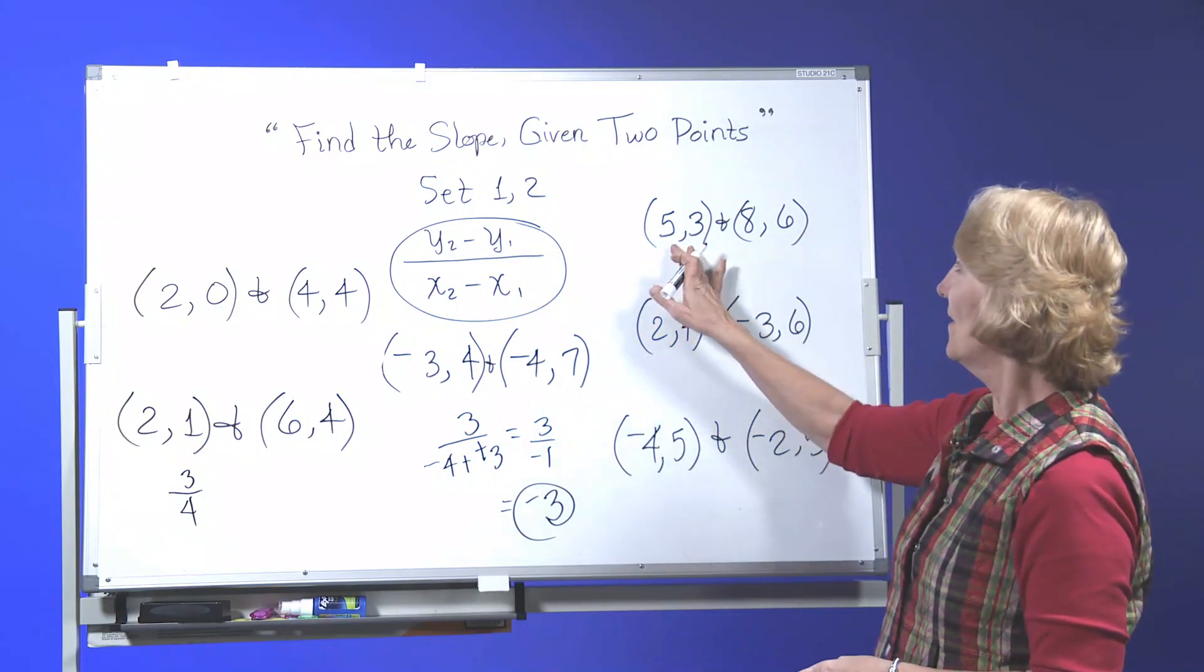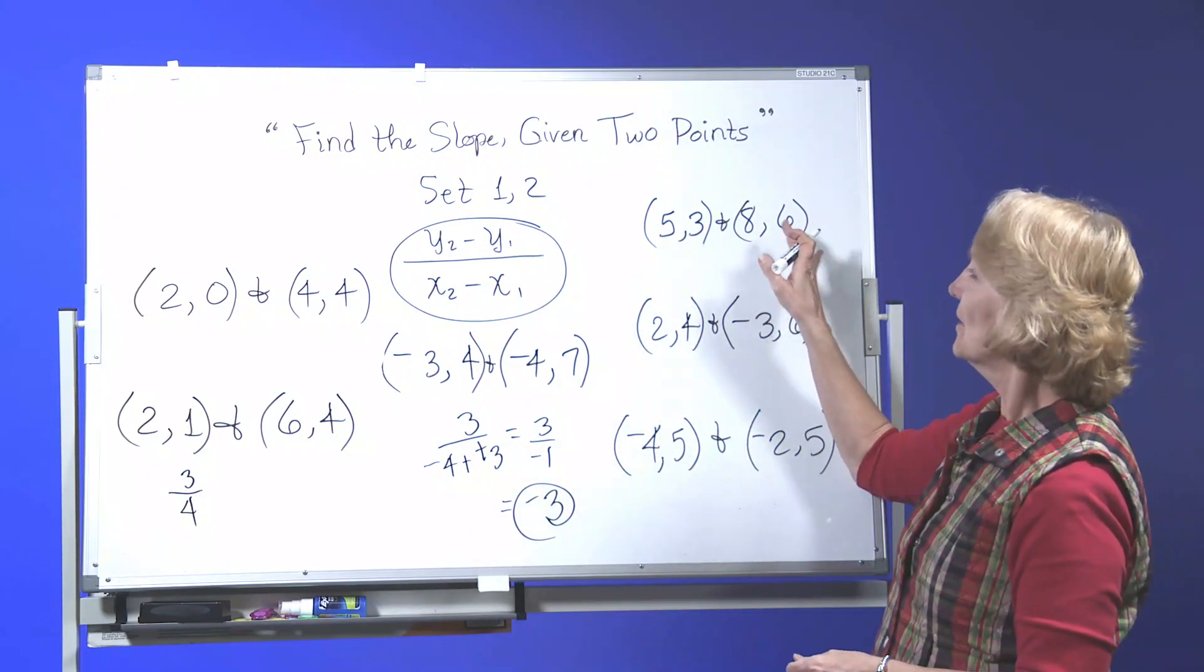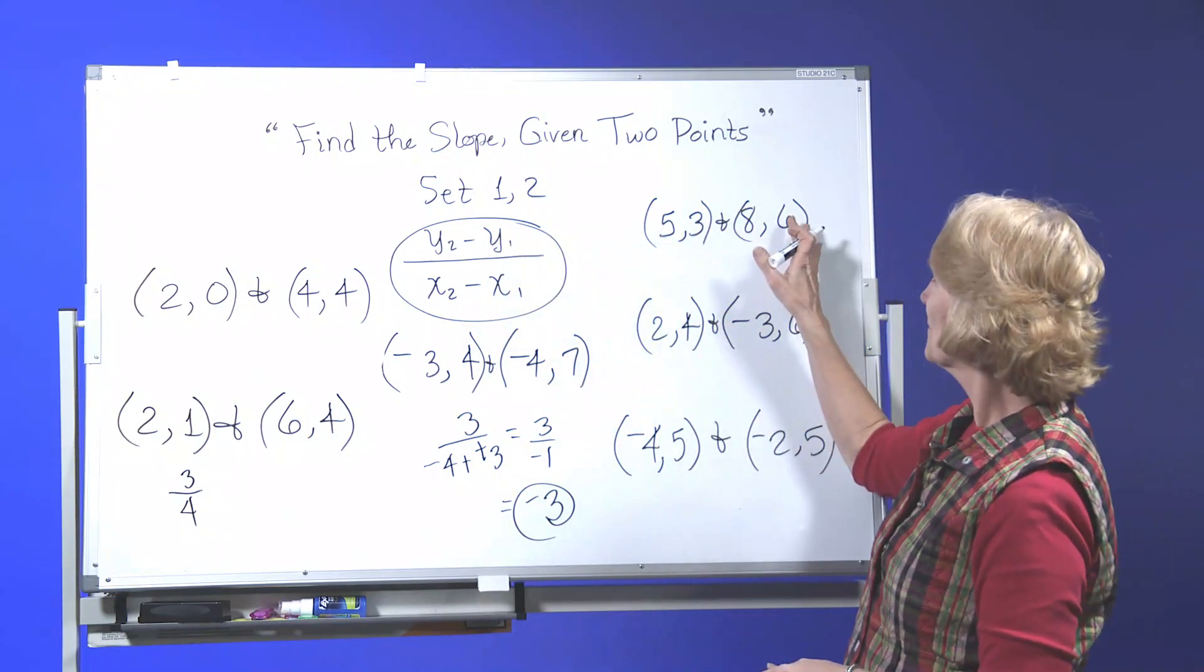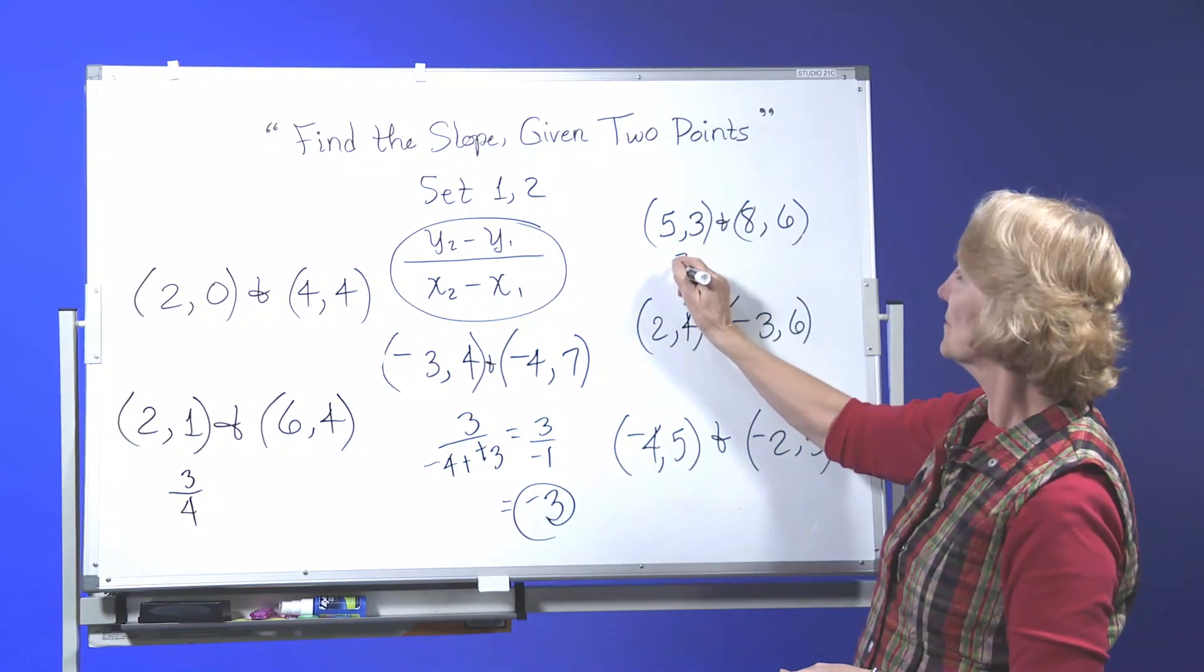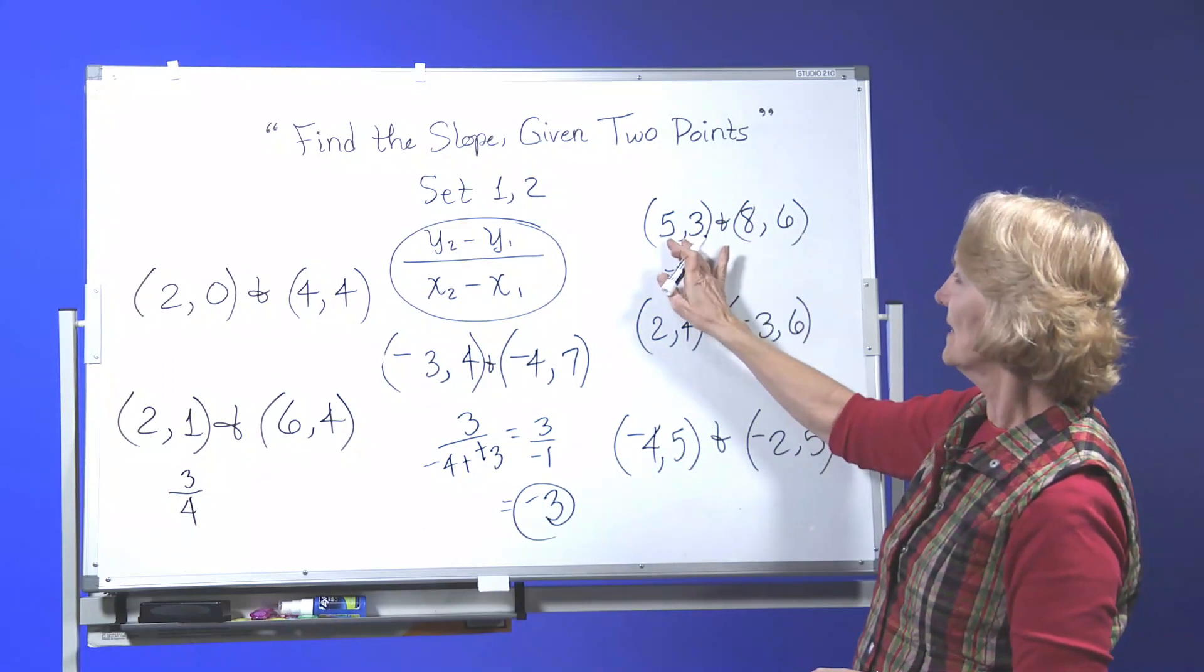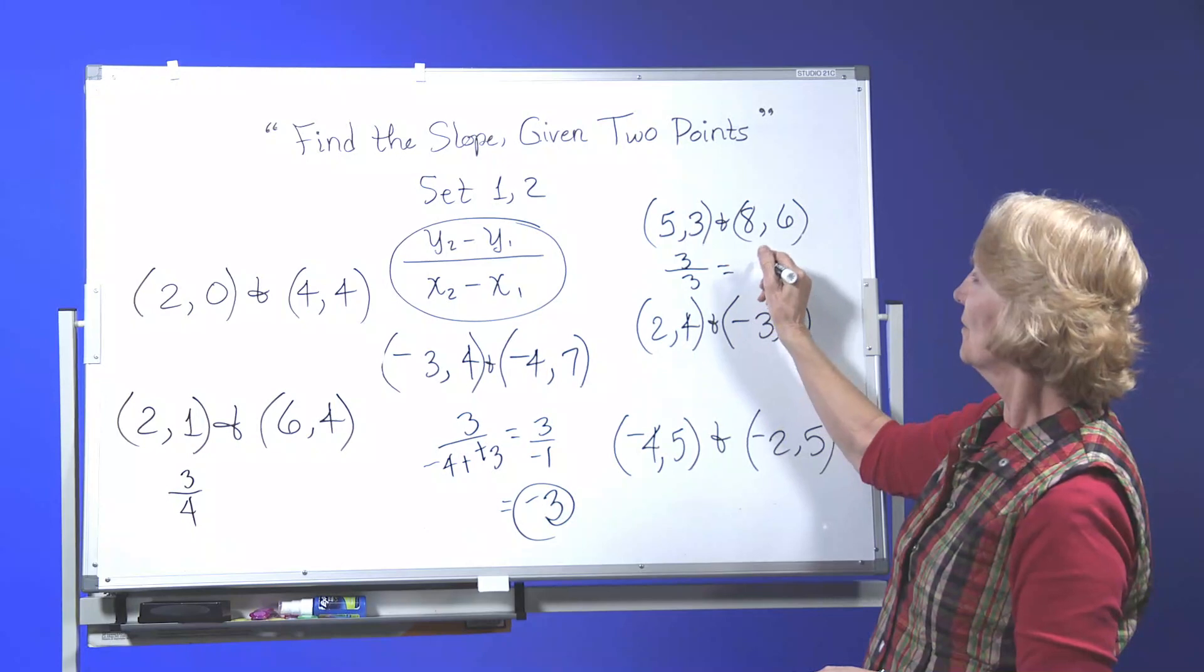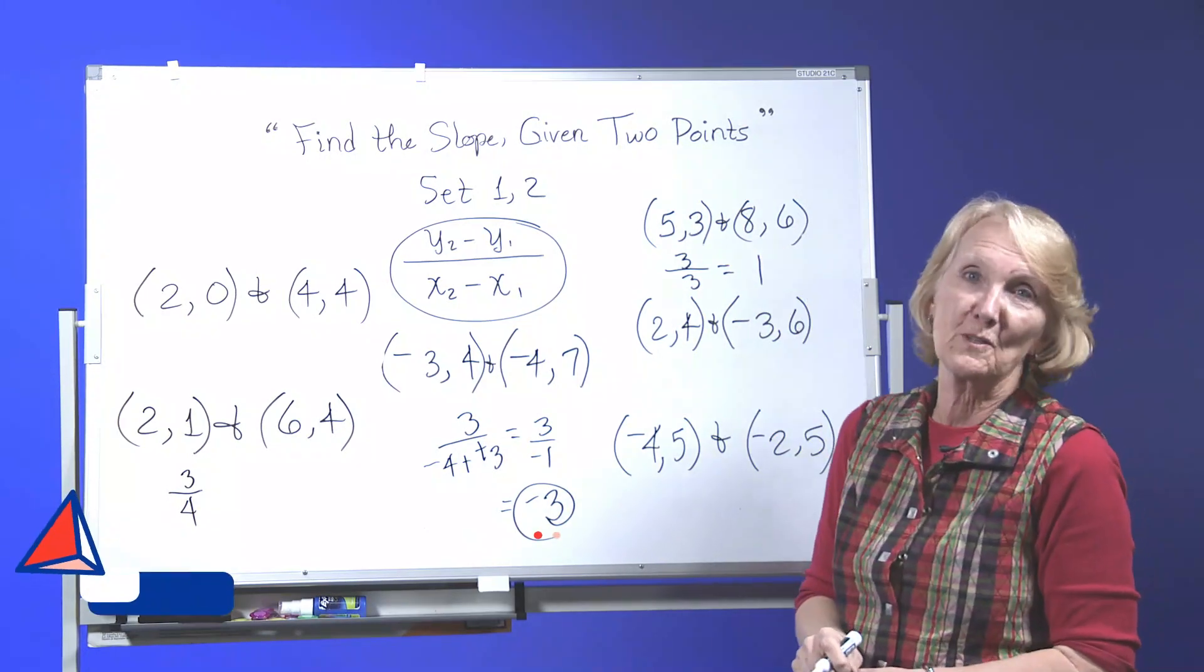Next one, 5, 3 and 8, 6. You do your second y minus the first y. 6 minus 3 which is 3 over 8 minus 5 which is 3. 3 over 3 is 1. So your slope is 1.